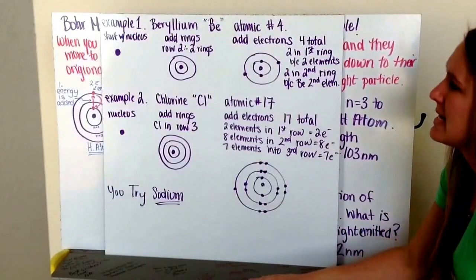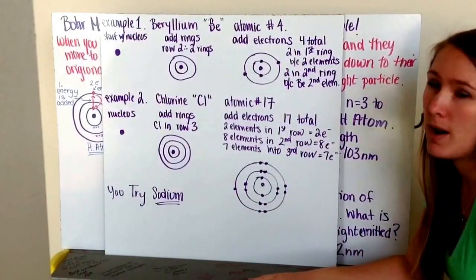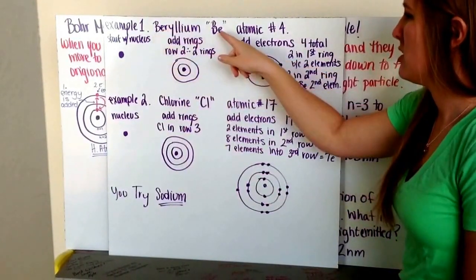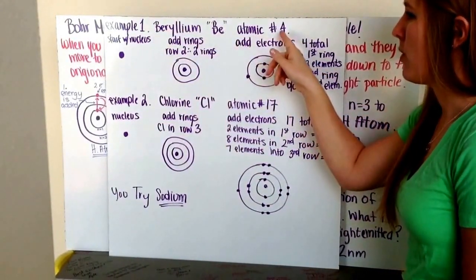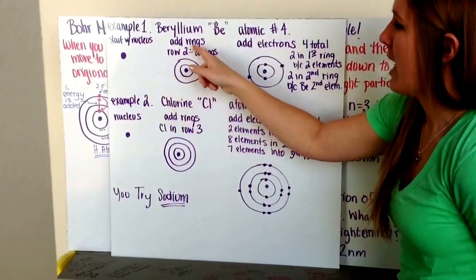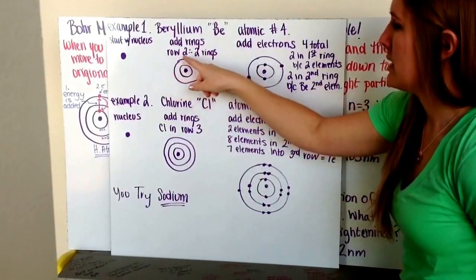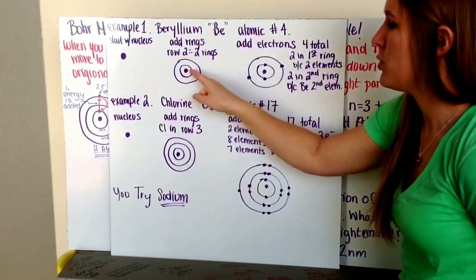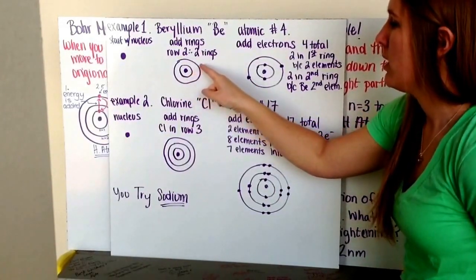This is an example of drawing the Bohr model. So example number one, we're drawing the Bohr model for beryllium, which is Be. It's atomic number four. I start by drawing my nucleus in the center, and then I add my rings. Beryllium is in row two of the periodic table, therefore it's going to have two rings. Ring one and ring two.